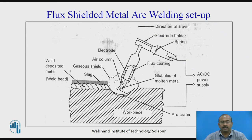This is the flux shielded metal arc welding setup, where you can see the welding circuit, which consists of elements like the electrode holder, electrode, the base metal, and AC or DC power supply. You can also see the electrode, air column, gaseous shield, solidified flux material in the form of slag, weld deposited metal called the weld bead, the work piece, and the arc crater.